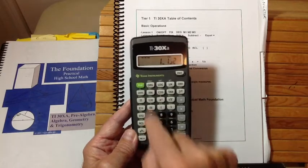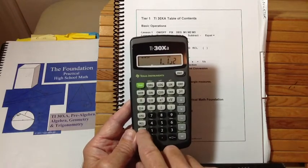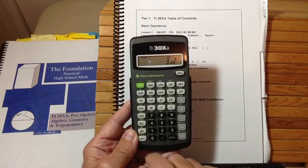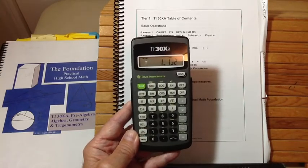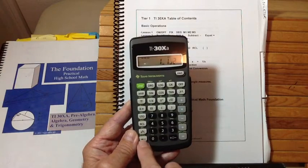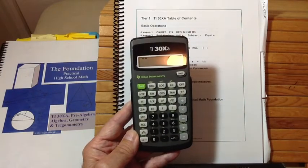You can make a proper fraction out of it by hitting second this key. That makes it a proper fraction. If you do it again, that makes it an improper fraction, one and a half. If you want to convert it to a decimal, you'd hit second this arrow. That converts it to a decimal.